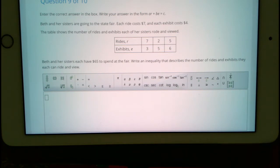Beth and her sisters each have $65 to spend at the fair. Write an inequality that describes the number of rides and exhibits they each can ride and view.